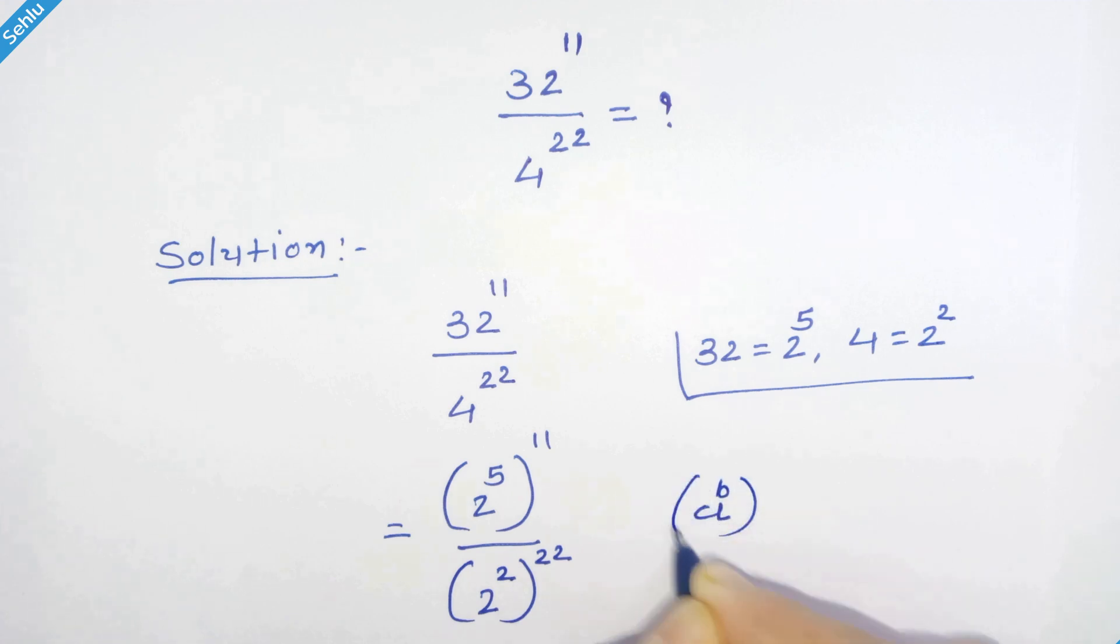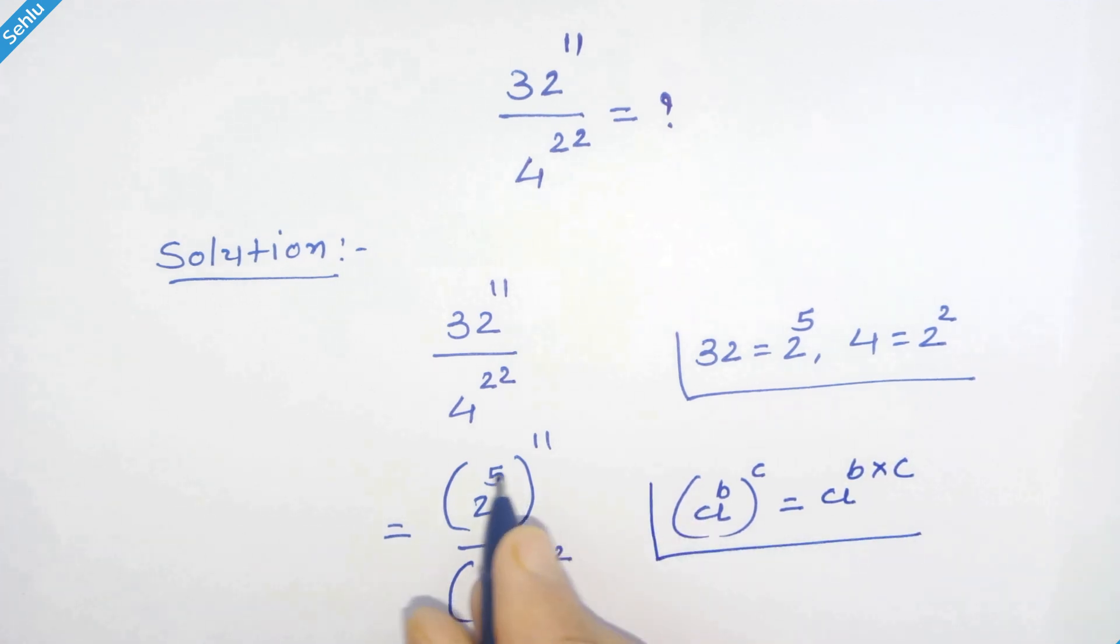a raised to b whole raised to c, then it can be written as a raised to b times c. And we will apply this rule here, so this 5 and 11 can multiply and 2 and 22 can multiply.